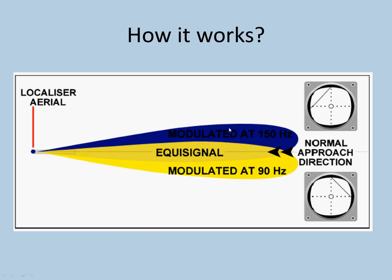On the right side, you have frequency modulated at 150 Hz. On the left side, you have frequency modulated at 90 Hz. If an aircraft is in this region, he will be receiving more of the yellow signal. If the aircraft is here, he will be receiving more of the blue signal.